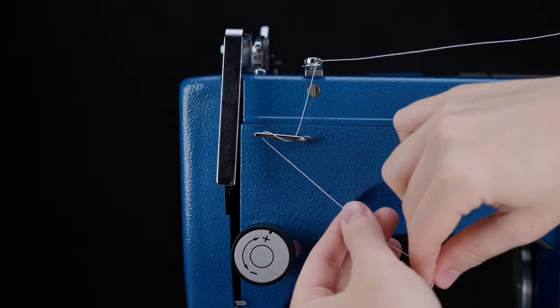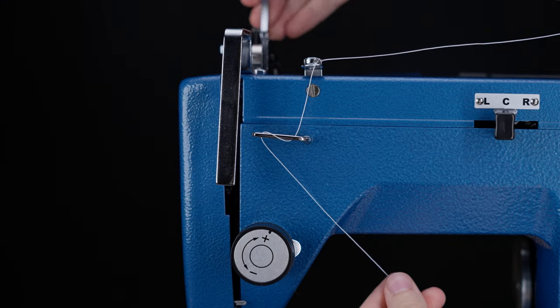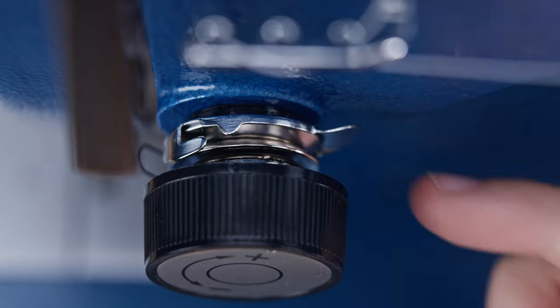Now we will carry it further down to the upper tension knob. Make sure the foot is raised at this point so that the disc in the tensioner will be open, allowing the thread to pass through.